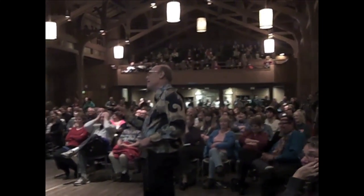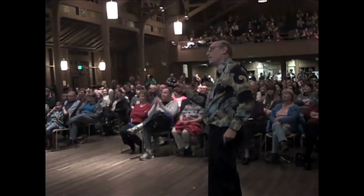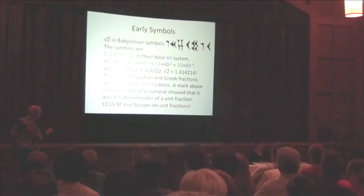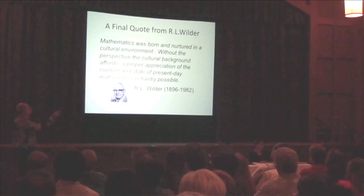The Babylonian system was base 60, and they computed the square root of two. Look how close they were — isn't that amazing? And unit fractions.